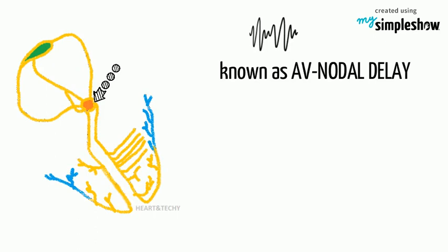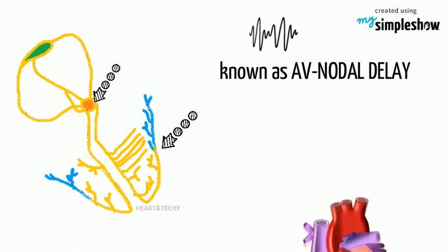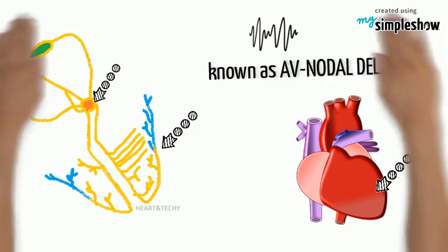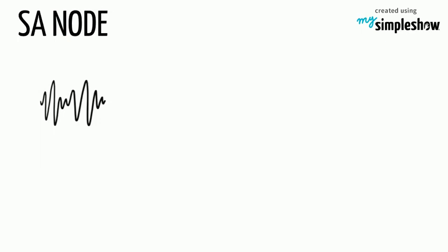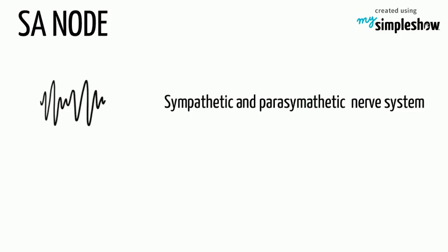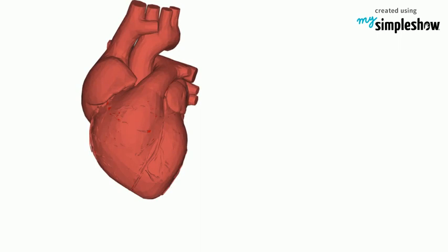Upon reaching the atrioventricular AV node, the signal is delayed. It is then conducted into the bundle of His, down the interventricular septum. The bundle of His and the Purkinje fibers spread the wave impulses along the ventricles, causing them to contract. The rate at which the SA node generates impulses is influenced by the autonomic nervous system — both sympathetic and parasympathetic nerve systems.